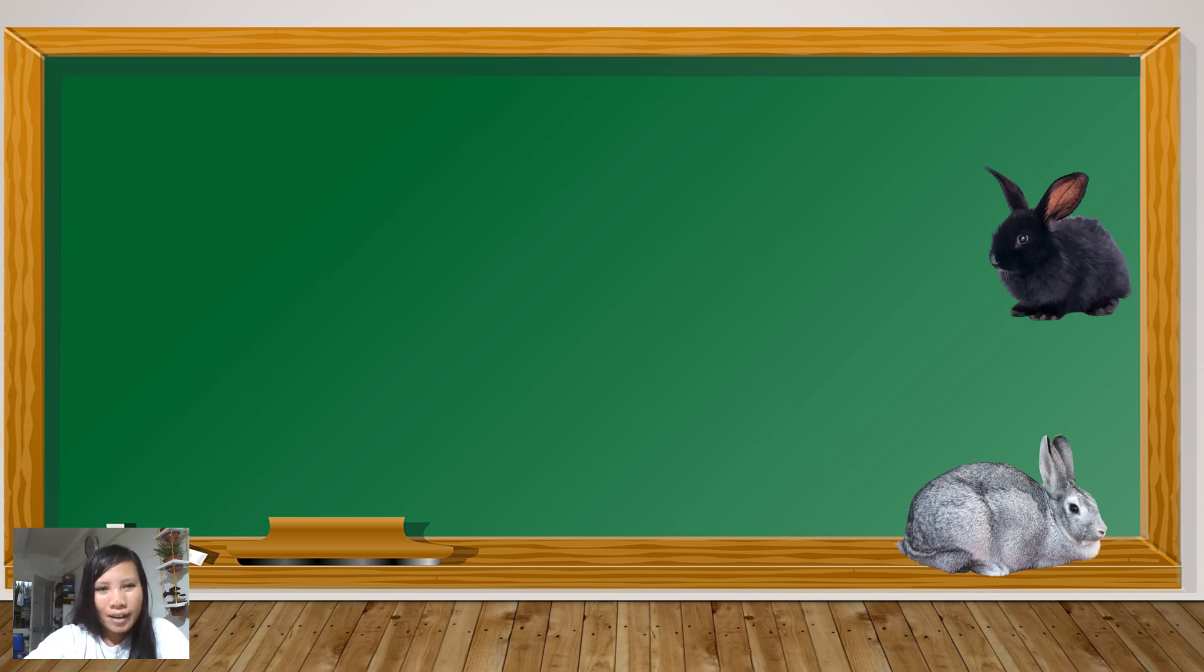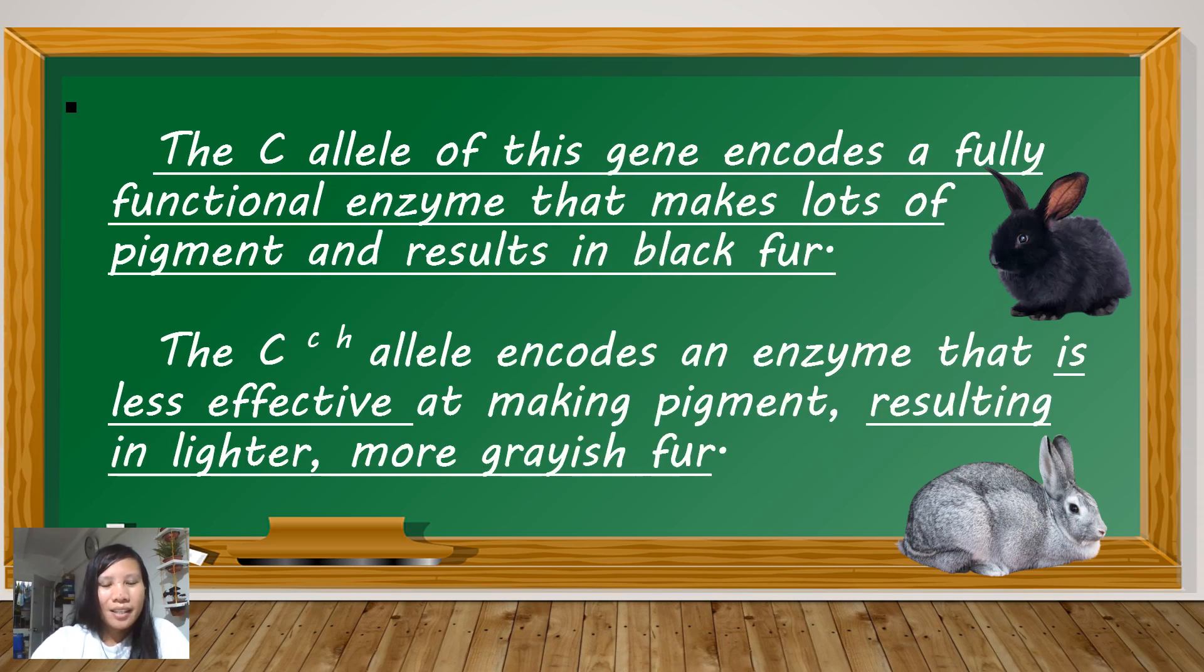Do you know why black is the dominant color and white or albino is the recessive color? Here is the simple explanation. The C allele encodes a fully functional enzyme that makes lots of pigments and results in black fur. The C-CH or Chinchilla allele encodes an enzyme that is less effective at making pigment, resulting in lighter, more grayish fur.